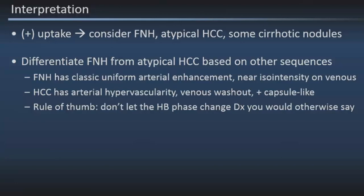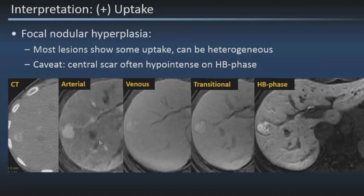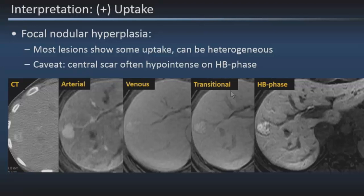Here's a case of an incidental hypervascular mass on a PE CTA. You can see arterial hypervascularity, relatively iso-intense signal on the venous phase, but by the transitional and hepatobiliary phase images it's very high signal intensity. This was correctly diagnosed as an FNH — even without the hepatobiliary phase images, you'd call that an FNH based on the dynamic post-contrast behavior. Notice that the central scar, which we associate with delayed hyperintensity on post-contrast imaging, is actually low signal intensity on the hepatobiliary phase — again, flipping the script.